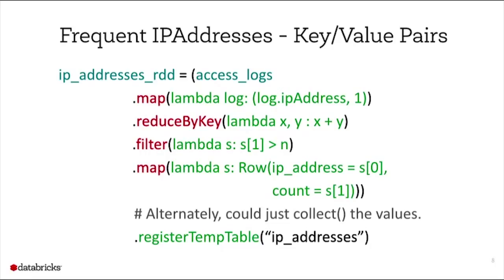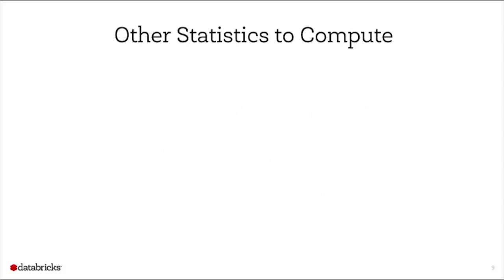For a more complex program using key-value pairs: I apply a lambda function to output the IP address with an initial count of one as a pair. Then instead of calling reduce, I call reduceByKey with a lambda that adds two values together. I filter to only keep IP addresses accessed at least a minimum number of times. I then register it as a Spark SQL table using a map function to create row objects with IP address and count fields. Logs are a great way to learn the different transformations and actions in Spark.